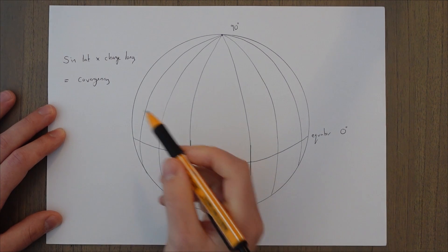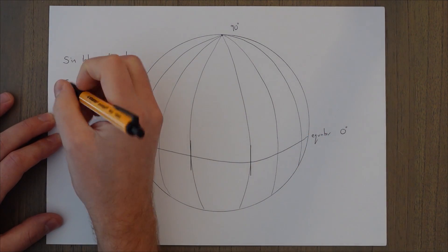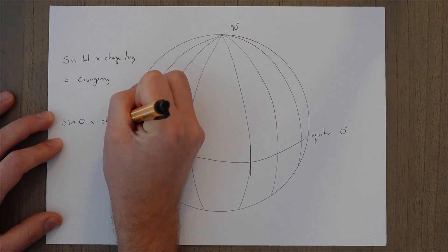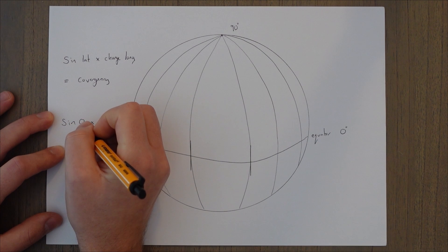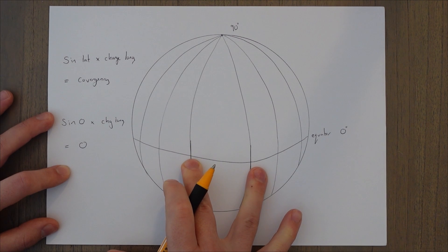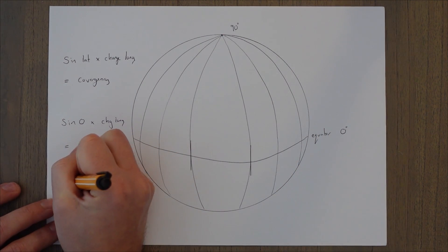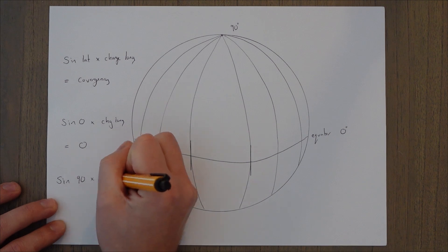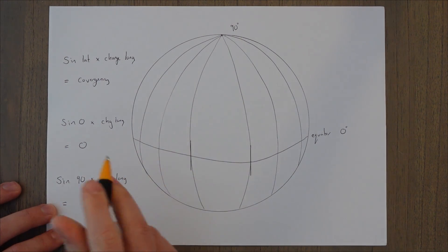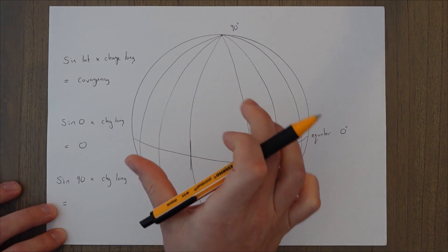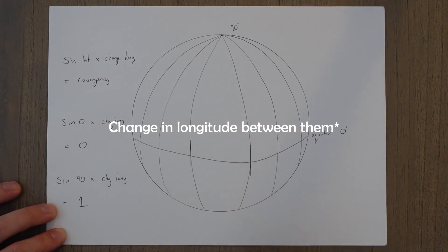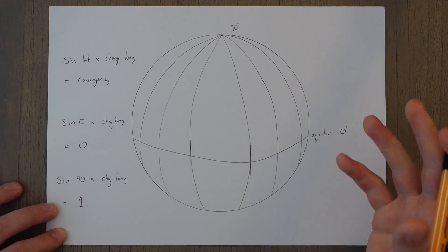Let's test that theory. We know there is zero convergency at the equator, so sine of zero times whatever the change in longitude is equals zero — because sine of zero is zero. So convergency equals zero: parallel lines, makes sense. Then going all the way up to sine of 90 times the change in longitude — sine of 90 is 1 — and that's what we saw in the previous example of that top-down view at the North Pole. The convergency of those lines is equal to the change in longitude. So we've got a theory and an equation for convergency.